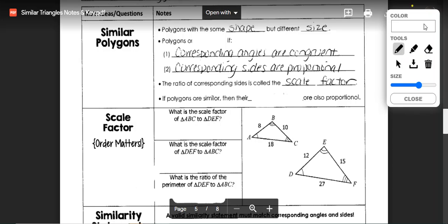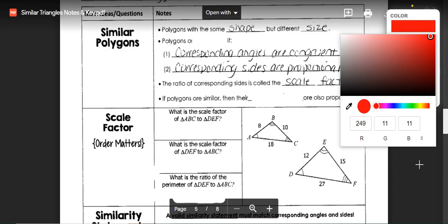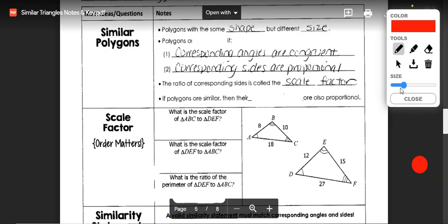Polygons that have the same shape but different sizes are considered to be similar if their corresponding angles are congruent.